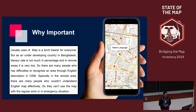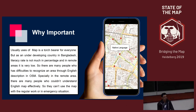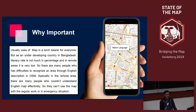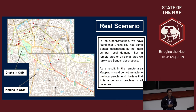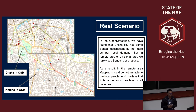So they can't use the map in regular work or in emergency situations like disasters. Bangladesh has so many disasters occurring every year, but it is a problem to see the real scenario. If you see the Dhaka map, the capital city, you'll find that Dhaka city has some Bengali descriptions, but not enough for our local demand. In remote or divisional areas, we rarely see Bengali descriptions in OSM.